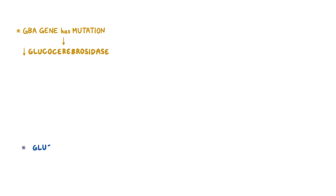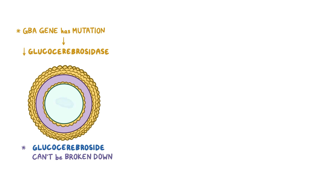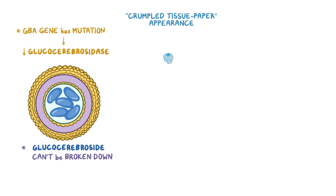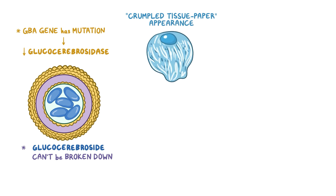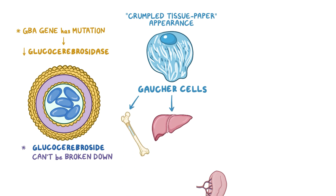In Gaucher disease, the GBA is faulty, meaning it has a mutation that leads to a reduction in the level or activity of glucocerebrosidase. Hence, glucocerebroside can't be broken down and it accumulates inside the lysosomes of macrophages. Under a microscope, macrophages have a characteristic lipid-laden or fatty appearance, similar to crumpled tissue paper. These transformed macrophages are called Gaucher cells, and they accumulate in multiple organs and tissues, including the bone marrow, liver, and spleen.